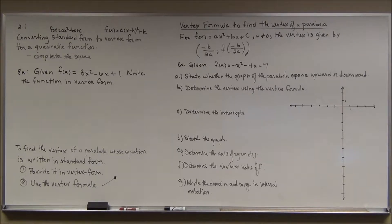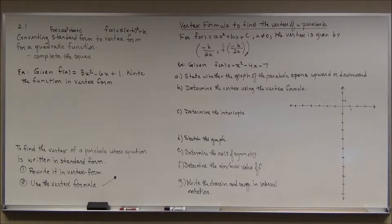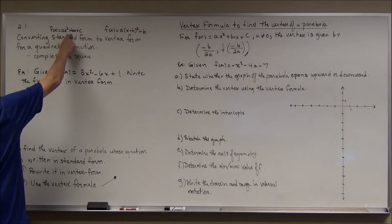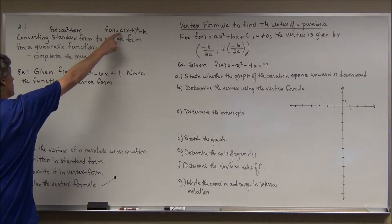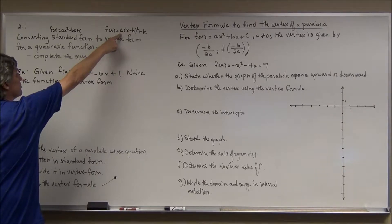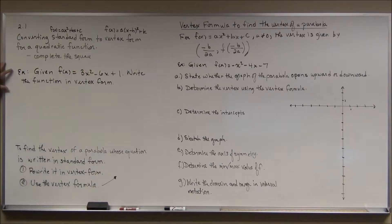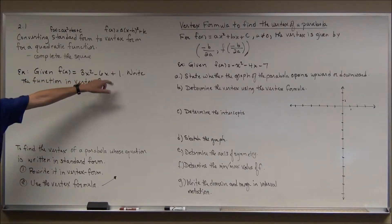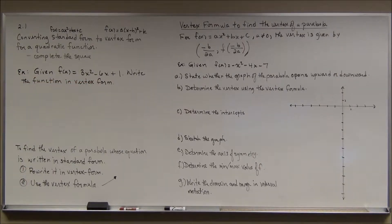We're back in section 2.1, continuing from where we left off. We were talking about quadratic functions, standard form, and vertex form. In this video I want to show you how to use completing the square to convert standard form into vertex form, because when you're graphing or sketching a parabola, knowing the vertex is key. The example here is f(x) = 3x² - 6x + 1; write the function in vertex form.